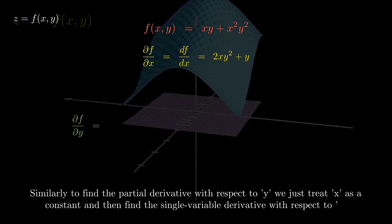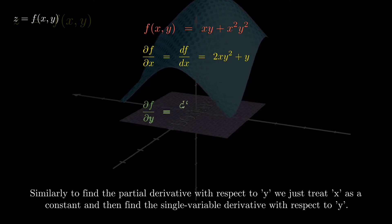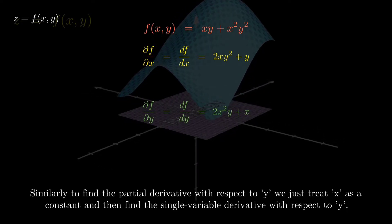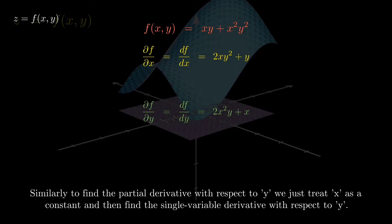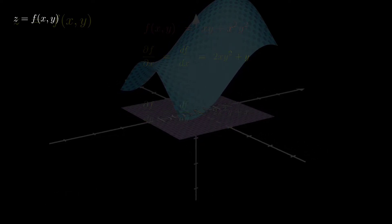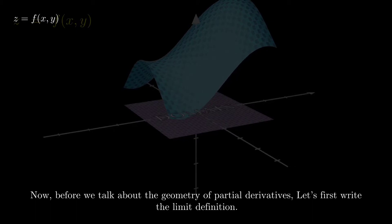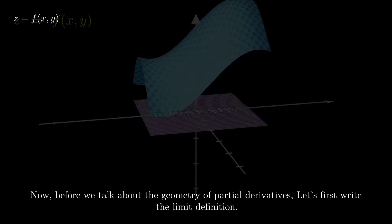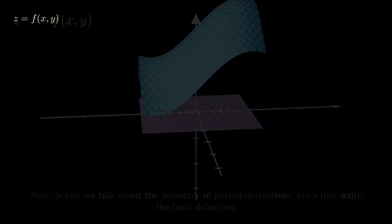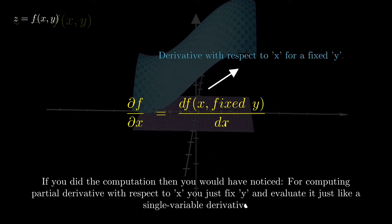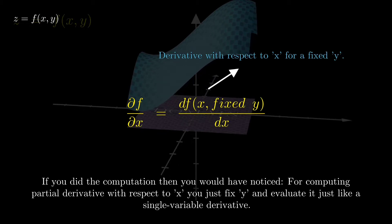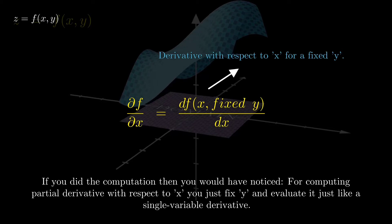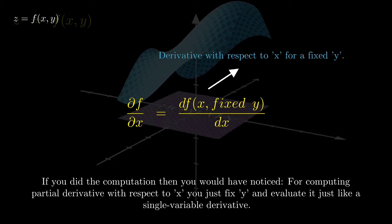Similarly, to find the partial derivative with respect to y, we treat x as a constant. Before we talk about the geometry of partial derivatives, let's write the limit definition. For computing the partial derivative with respect to x, you just fix y and evaluate it just like a single variable derivative.